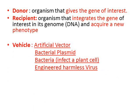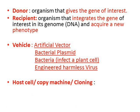In transgenesis we talk about vehicles or ways of transporting the gene of interest from the donor to the recipient. We can use artificial vectors, bacterial plasmid — a plasmid is a circular DNA naturally found in bacteria — we can use bacteria itself, for example agrobacteria to infect plant cells, and we can use engineered harmless viruses. We also talk about a host cell for cloning to produce many copies of the gene of interest, using bacteria, yeast cells, or plants with a recombinant plasmid.